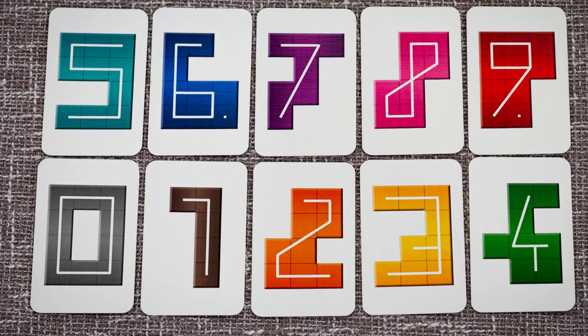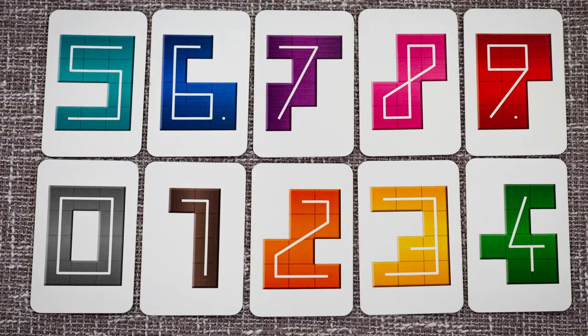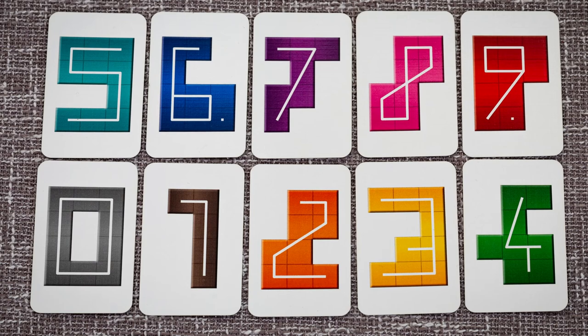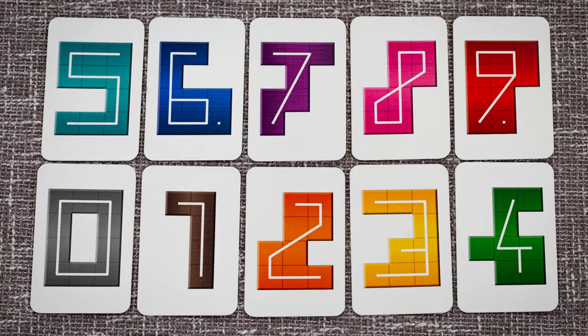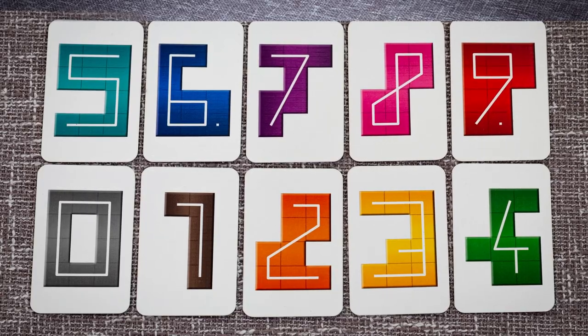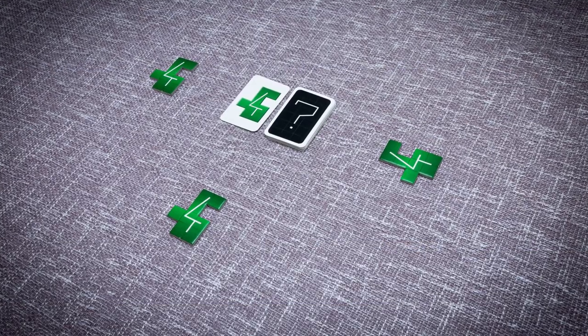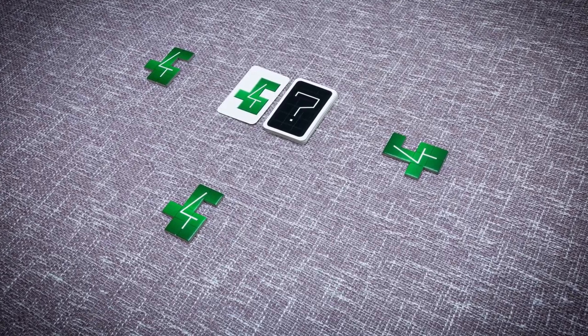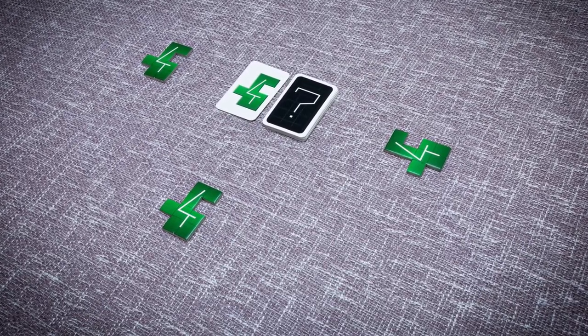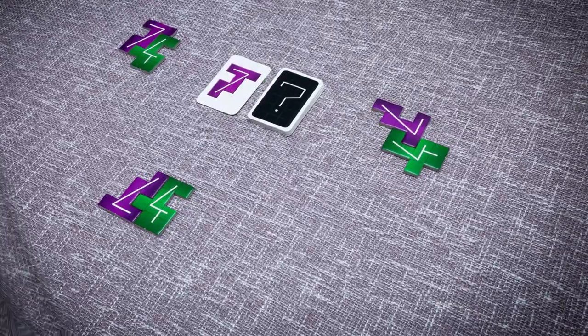The game includes 20 cards numbered 0 to 9 twice, and 80 tiles numbered 0 to 9. Each number tile is composed of squares in some arrangement. After shuffling the deck of cards, draw and reveal the first card.